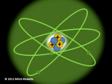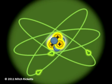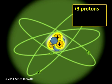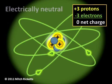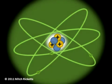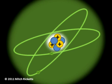In an electrically neutral atom, the number of protons in the nucleus equals the number of electrons in the outer reaches of the atom. When an electron is stripped from an atom, in the remaining atom the protons outnumber the electrons, and the atom has an overall positive charge. This atom is called a positive ion.